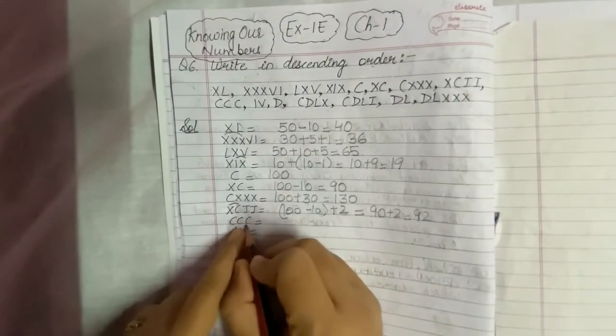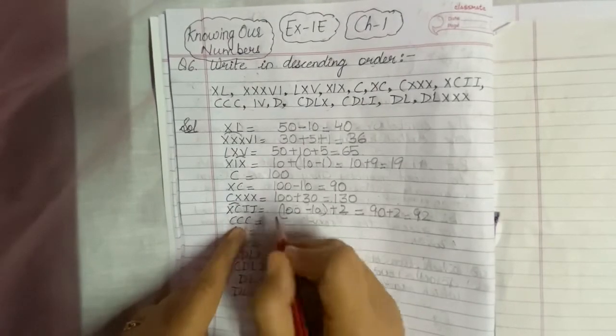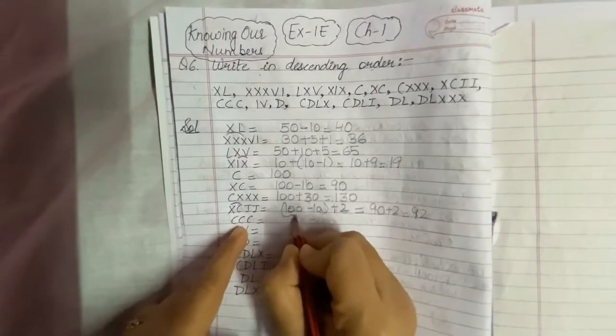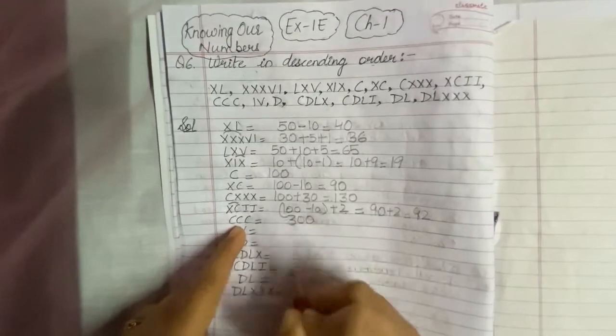Next is CCC. C stands for 100, so CCC equals 300.